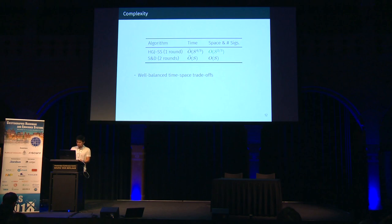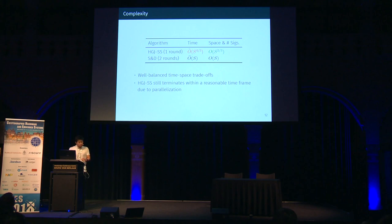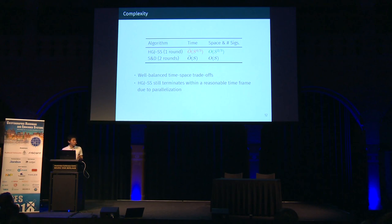We analyzed this algorithm in detail and observed well-balanced time-space trade-offs. Compared to the previous sort-and-difference approach, our range reduction algorithm is much more space-efficient. The drawback is that time complexity is slightly worse, but in practice the Schroeppel-Shamir-based range reduction terminates within a reasonable time frame by making use of large-scale parallelization, which I'll revisit in the implementation section.